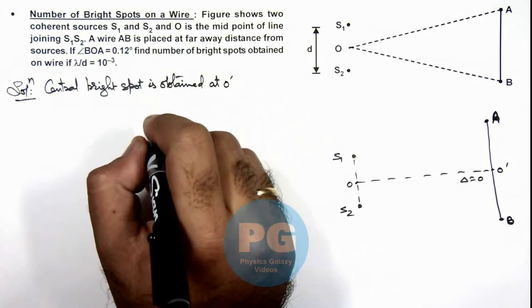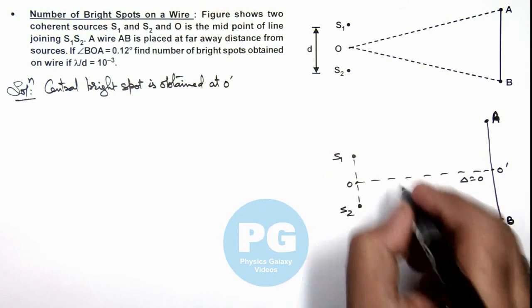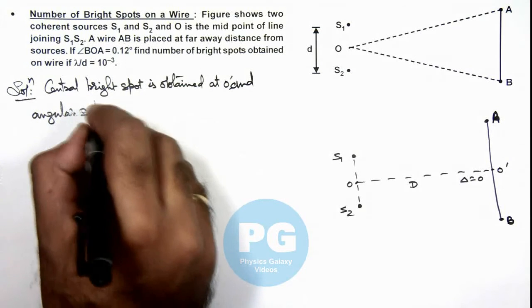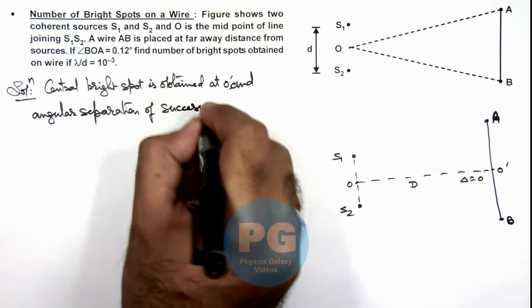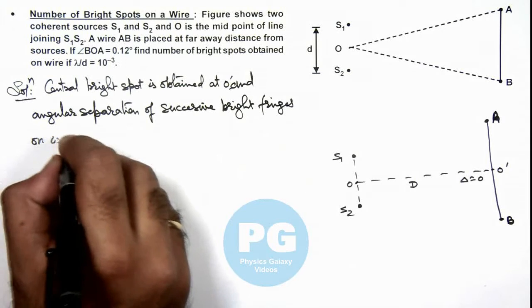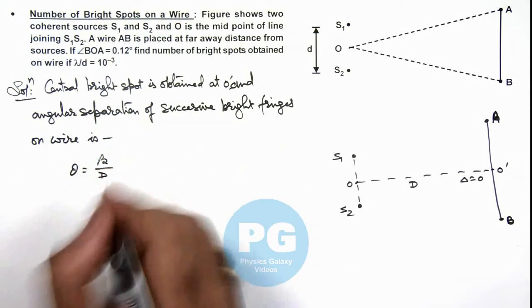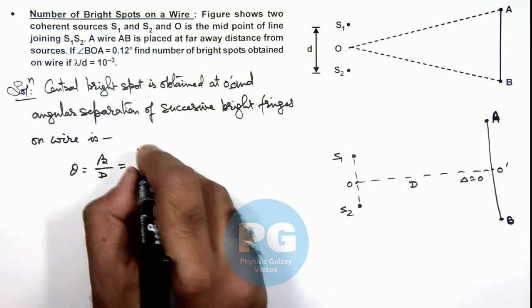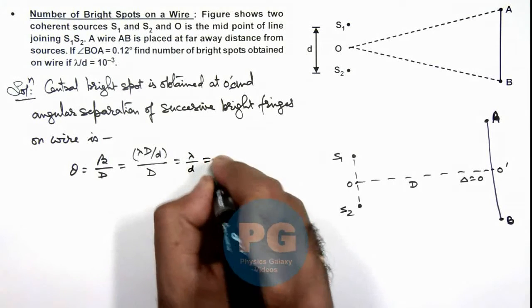And if we calculate the angular separation of successive bright fringes on wire, this angular separation we can write as fringe width β divided by D, if D is the separation between the line of sources and the wire. And this fringe width we know it is given as λD/d divided by capital D, so this gives only λ/d, which we are already provided as 10⁻³.